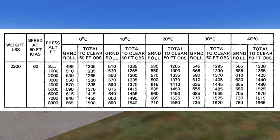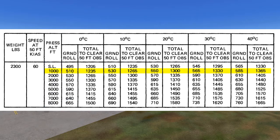Looking at the chart, it is conservative to go to 1,000 feet pressure altitude since we are above sea level, and the ground roll is longer as the pressure altitude goes higher. For our example, we will say the temperature is 85 degrees Fahrenheit, which is just below 30 degrees Celsius.